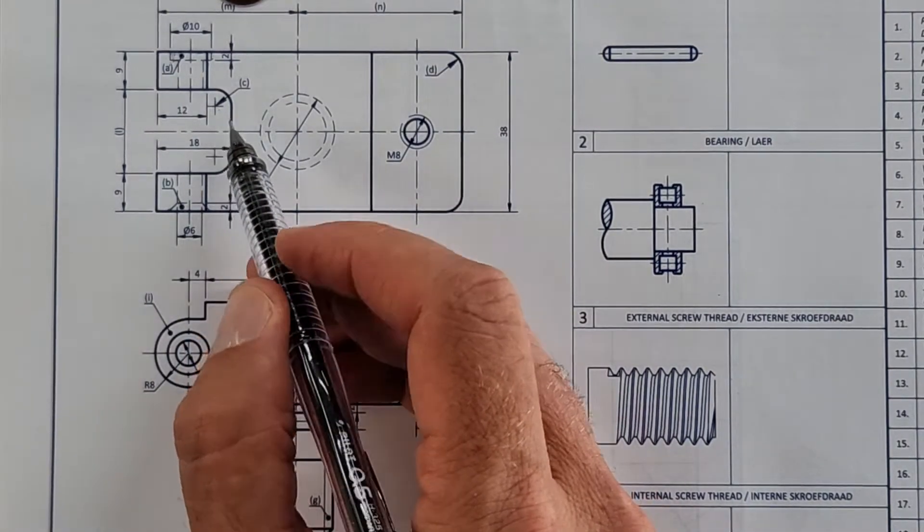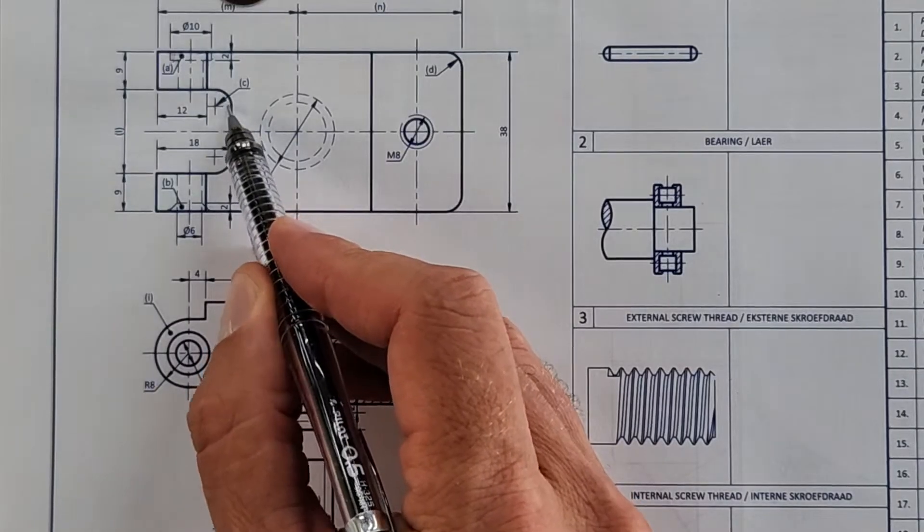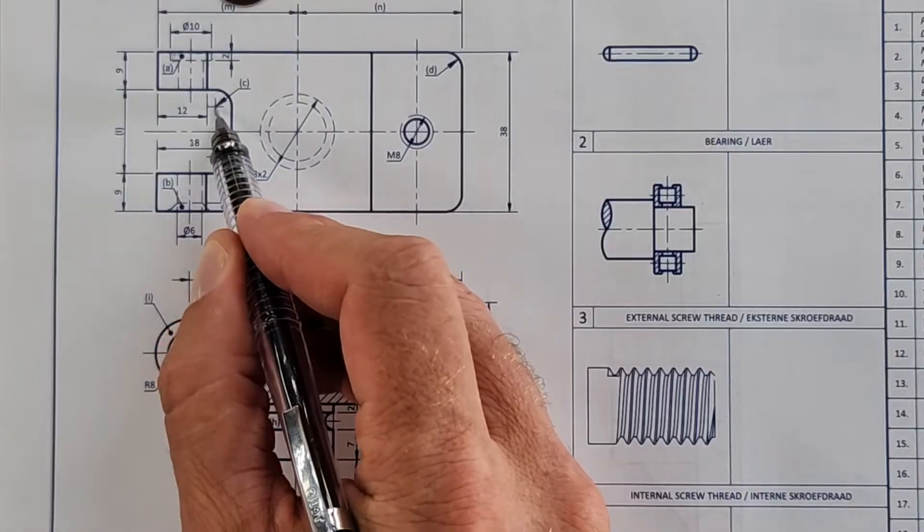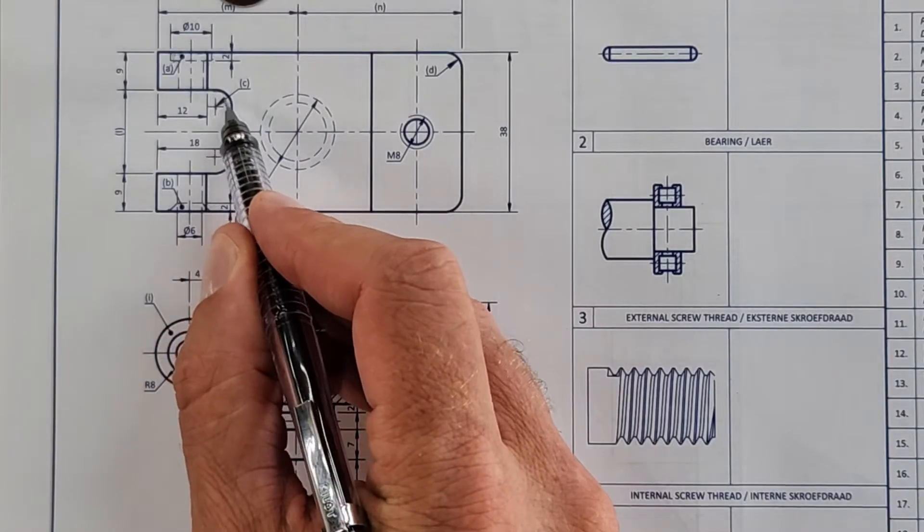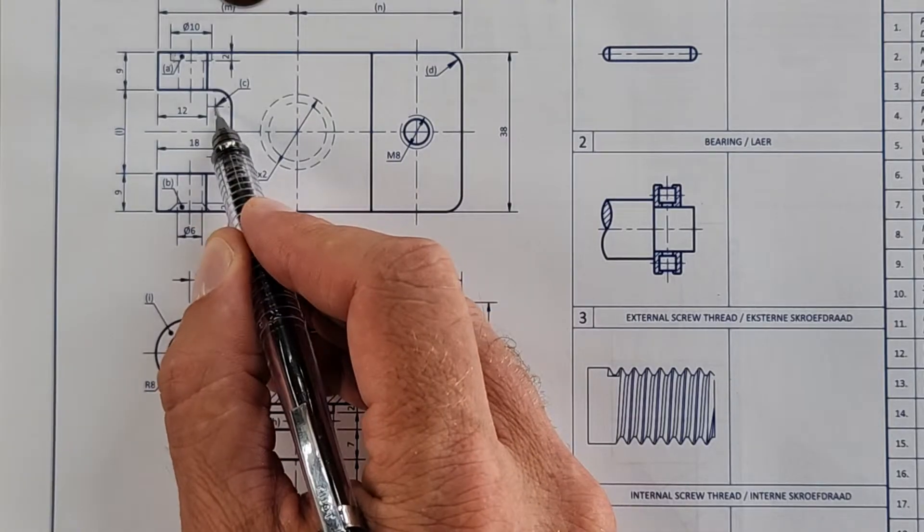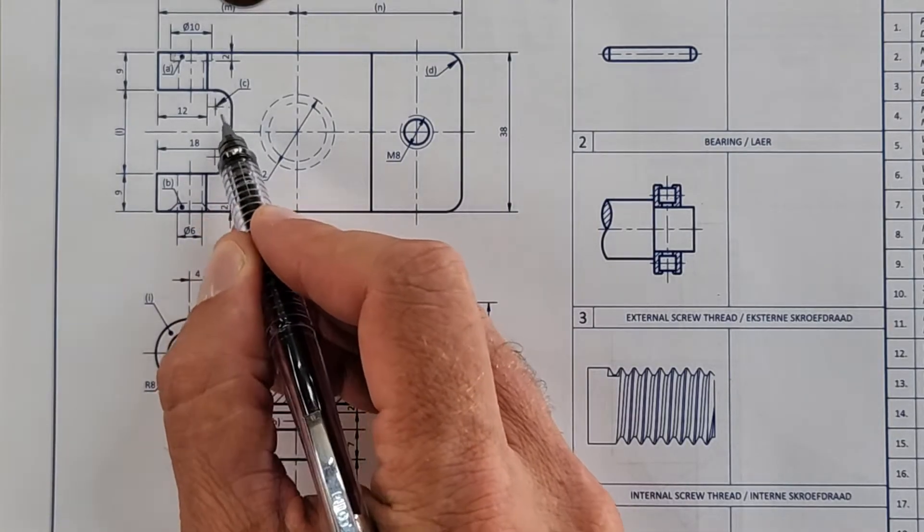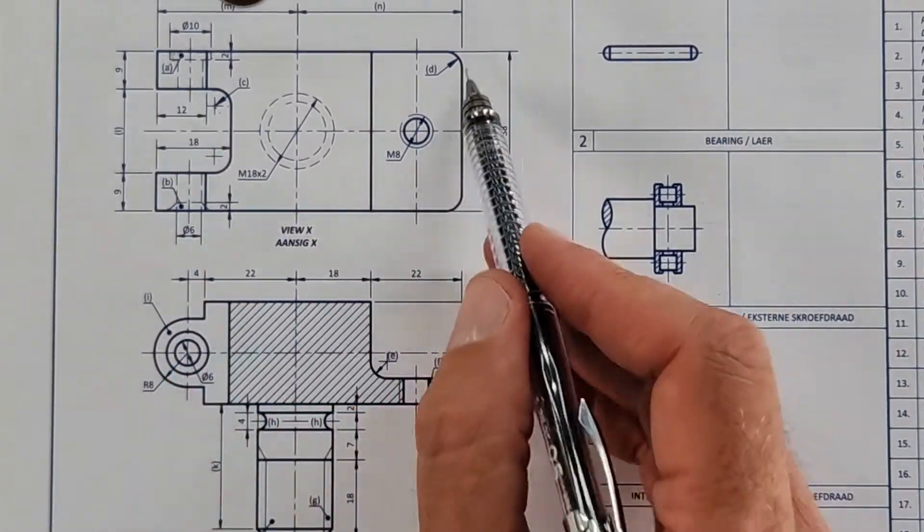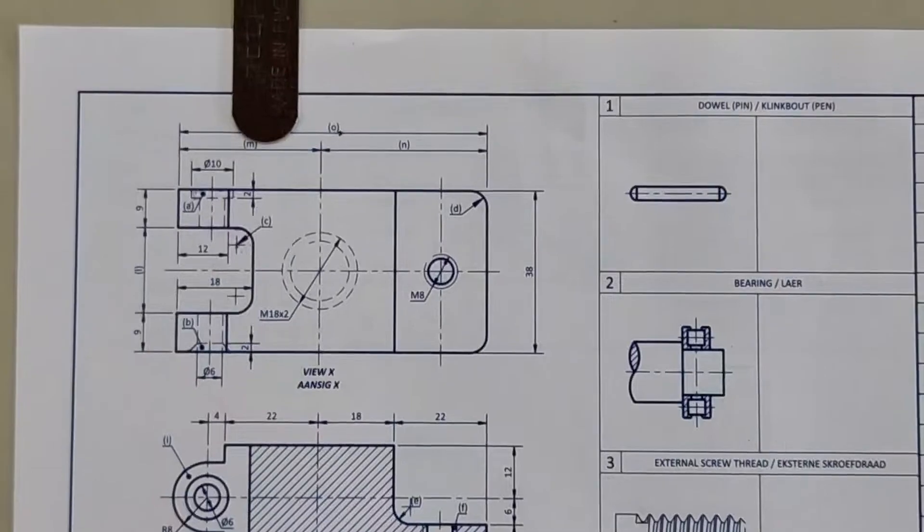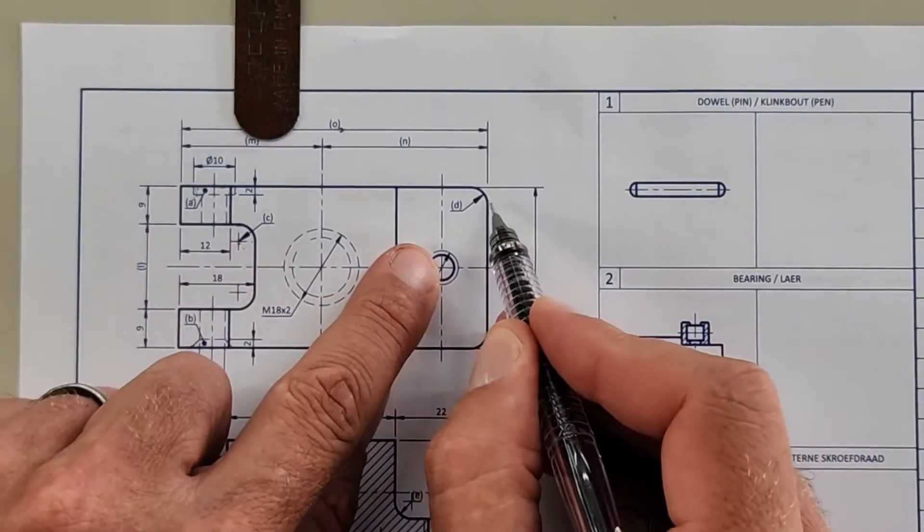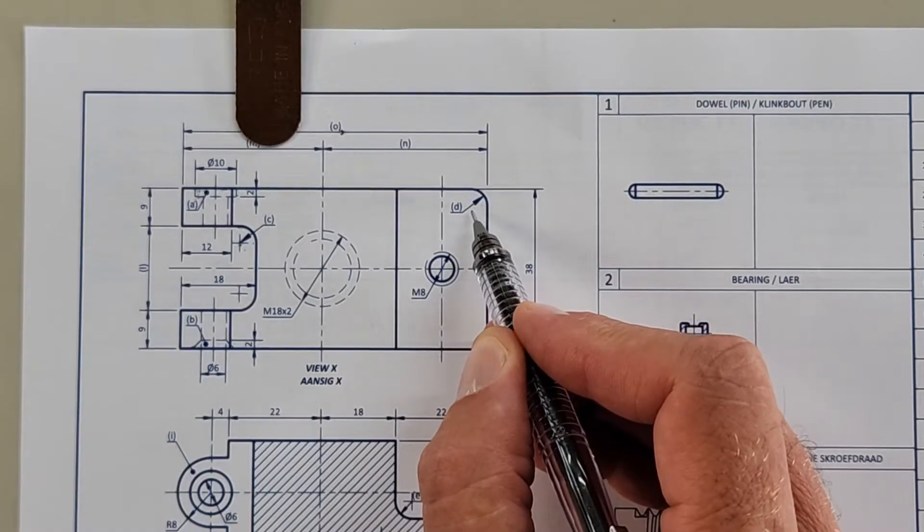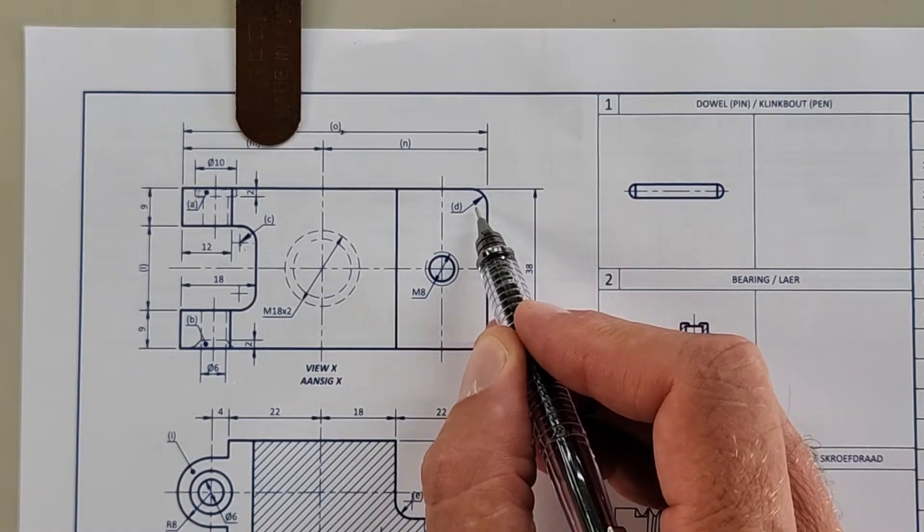C is the center point for this radius of the fillet. The center point of the fillet's radius. Then we go to D. That is then on the outside, it's called a round. Ronding Afrikaans, round in English.